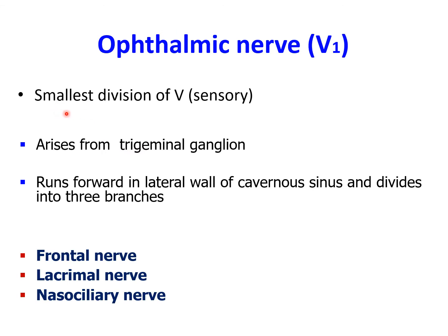The ophthalmic nerve is the smallest division of the trigeminal nerve and is purely sensory. It arises from the trigeminal ganglion, travels in the lateral wall of the cavernous sinus, and leaves the skull through the superior orbital fissure, dividing into three branches: the frontal, the lacrimal, and the nasociliary branches. All three are purely sensory.